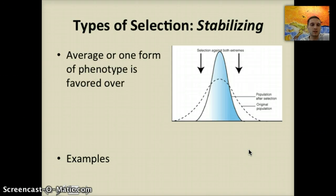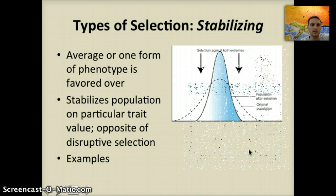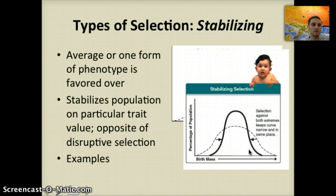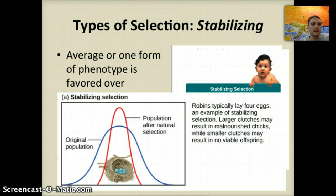The last form of selection is stabilizing selection — when the average or middle form of the phenotype is favored over the others, helping to stabilize the population on a particular trait value. It is the opposite of disruptive selection. A great example is seen in human birth weight: babies that are too small have a decreased chance of survival, and babies that are too large are physically more difficult to deliver — especially before C-sections — so more babies are born at this average form. We can also see this in the number of eggs birds lay: too few reduces survival chances, too many means they can't provide food for all the chicks.